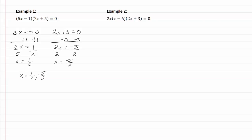Let's take a look at example two. In example two, I have three factors. I have the 2x equal to zero, x minus 6 equal to zero, and 2x plus 3 equal to zero.